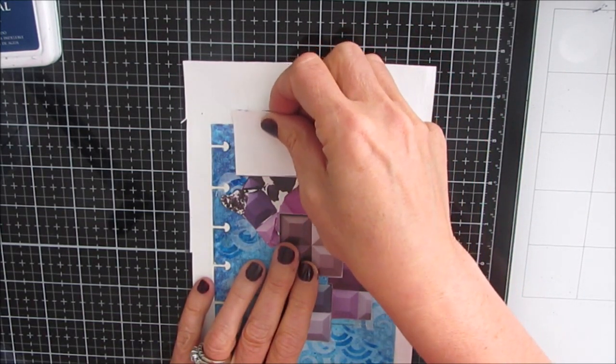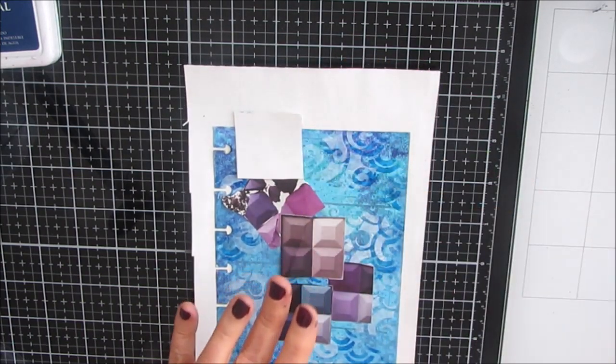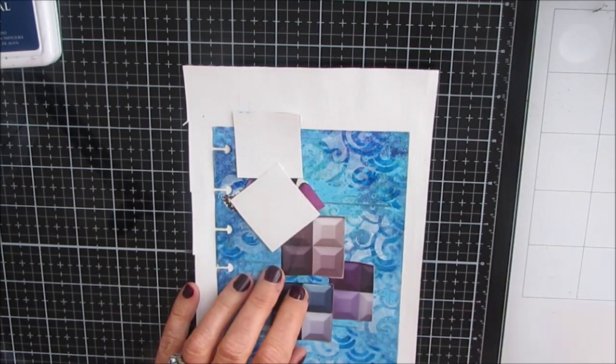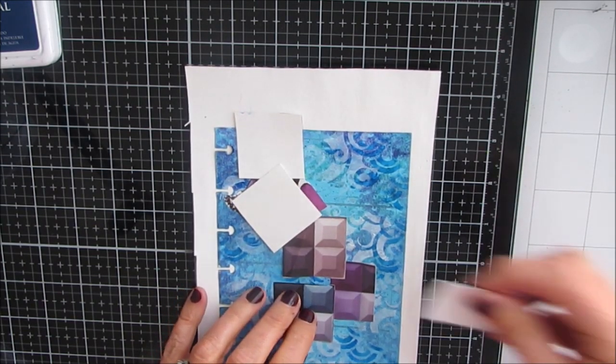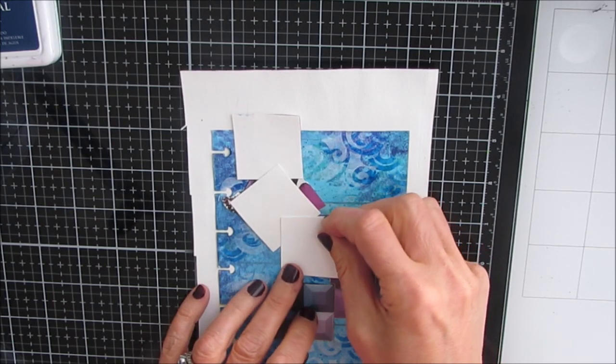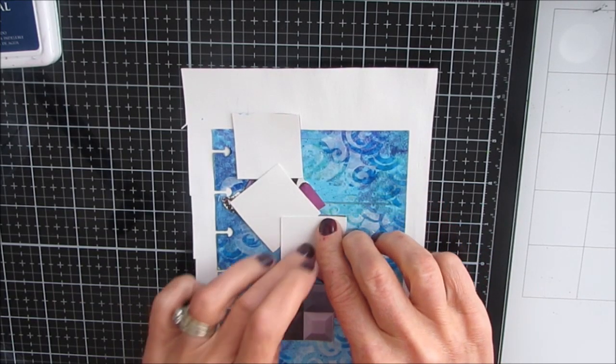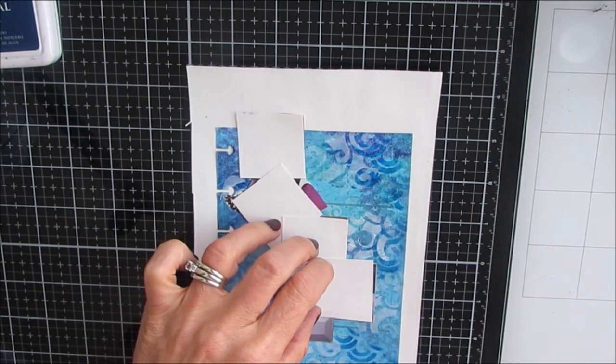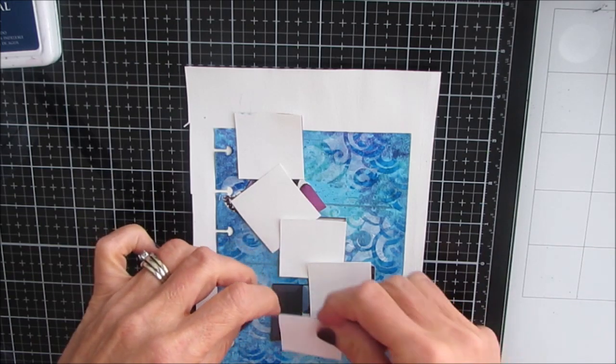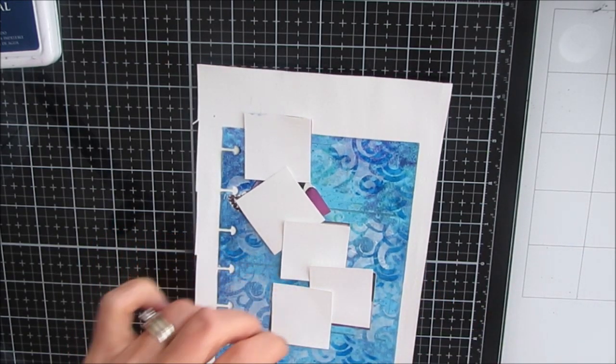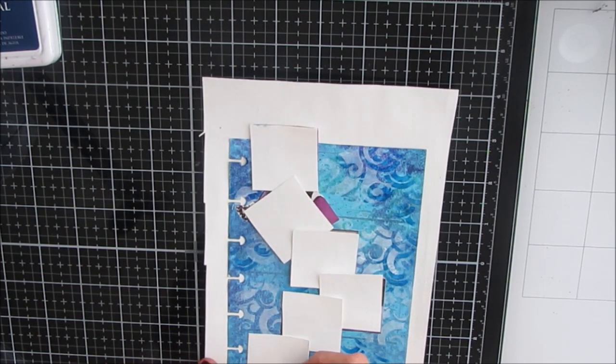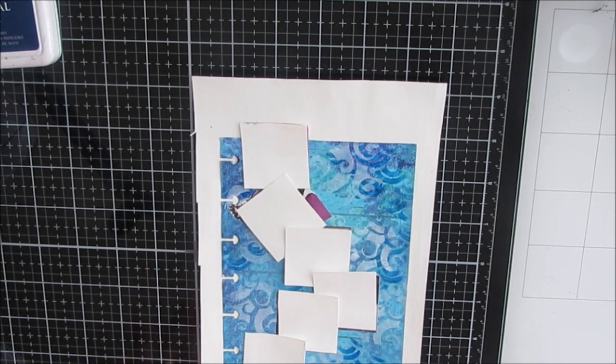So what I did is I cut some squares the same size because I figure this size is working for my quote journal. If I was doing a larger canvas or an art journal page that was bigger, I would increase the size of this square. So I'm just cutting them out because I am visual and I need to see it laid out. I'm adding one and I just like that kind of swoop throughout the page.